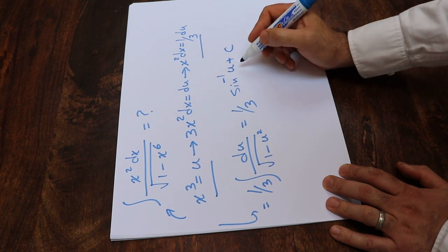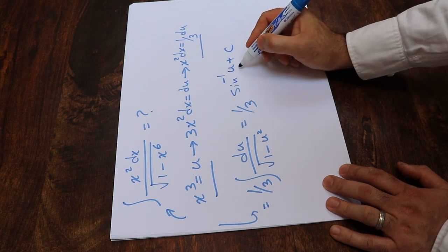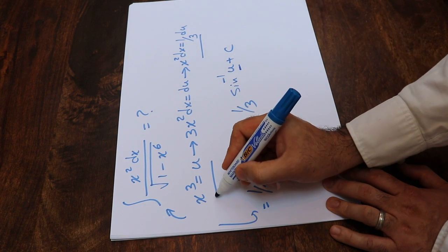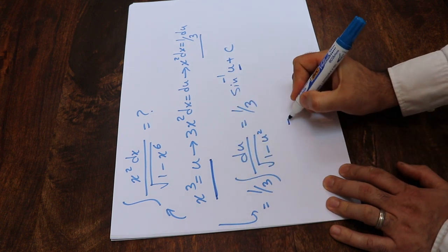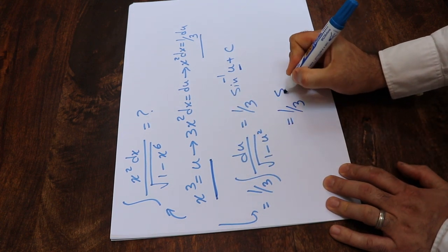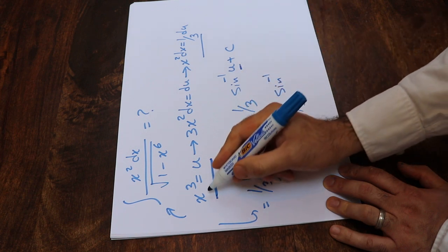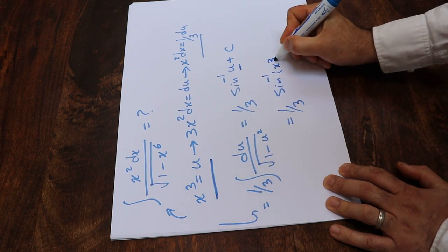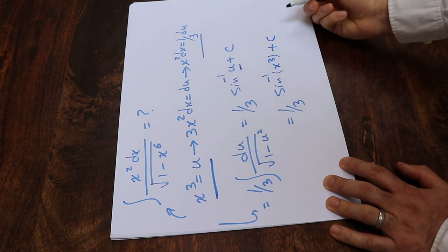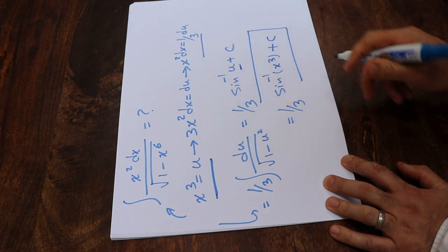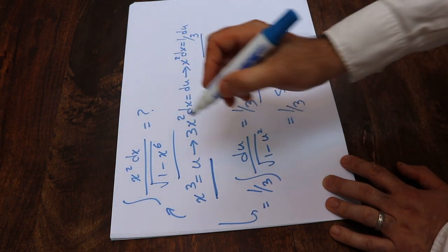All you need to do at this stage is simply substitute this parameter u with the definition of u, which is given here. That will equal 1 divided by 3 sin⁻¹, instead of u, I write x³ plus c. And that's the solution to this integral.